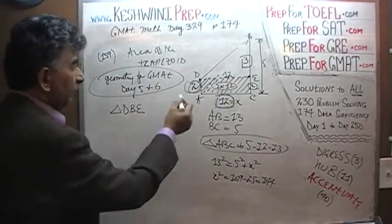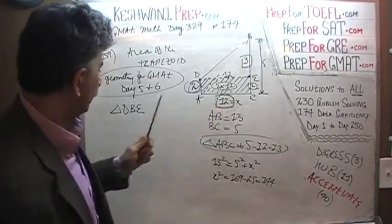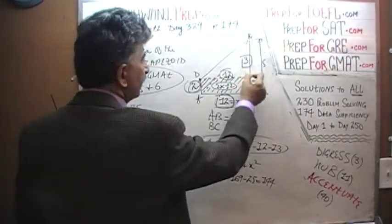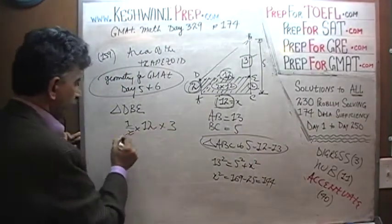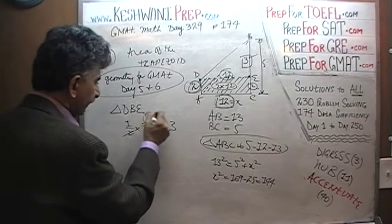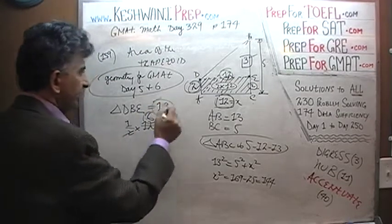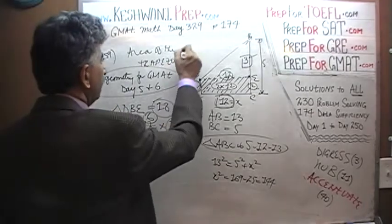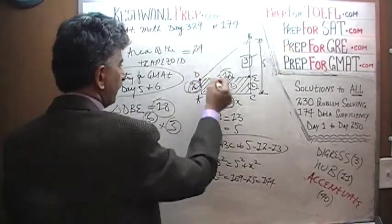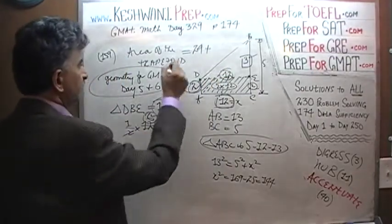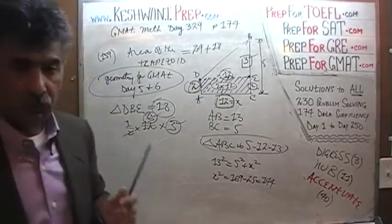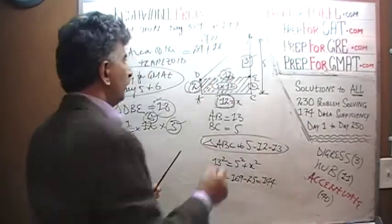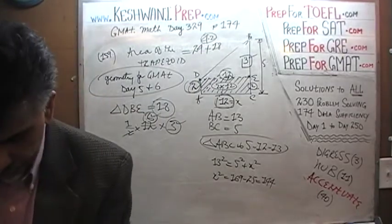So in triangle DBE the base is 12 and the height from B to E is 3. Area equals one-half times base 12 times height 3. Dividing, that gives us 6 times 3 which is 18. The area of the rectangle was 24 and the area of the triangle is 18, so 24 plus 18 equals 42. The area of the trapezoid is 42. The answer is C.